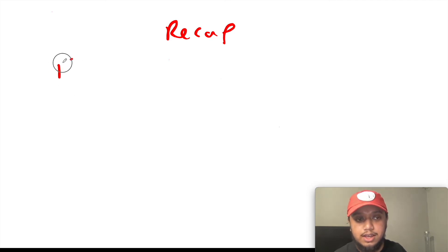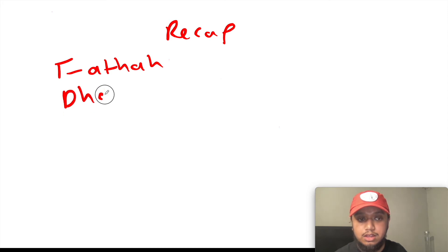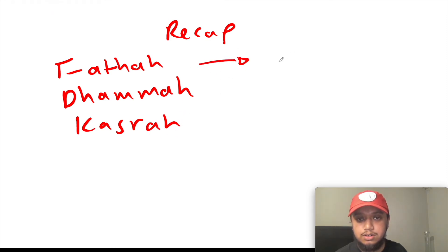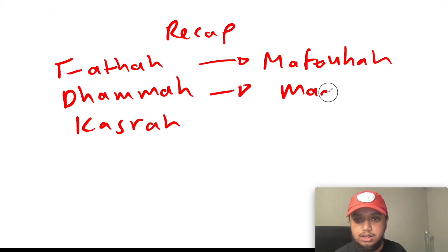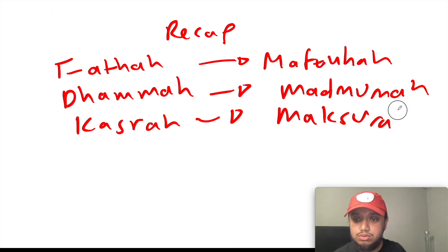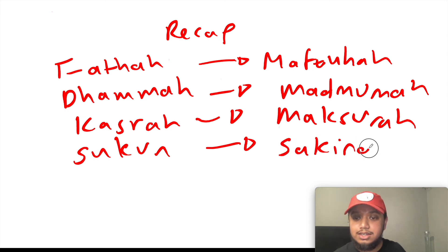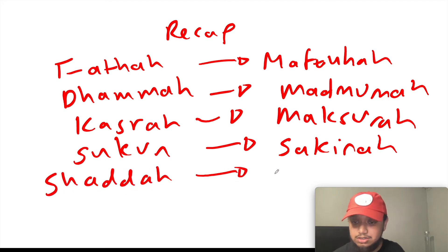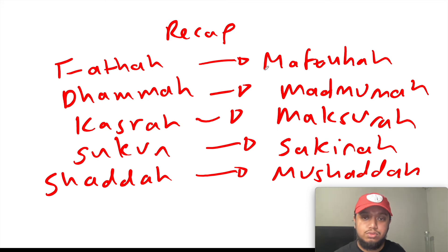To recap: the diacritical markings are fatha, dhamma, and kasra. A letter with a fatha is maftuha; with a dhamma is madmuma; with a kasra is maksura. There is also the sukoon — a letter with it is saakina — and the shadda, also known as tashdeed, making the letter mushadda.